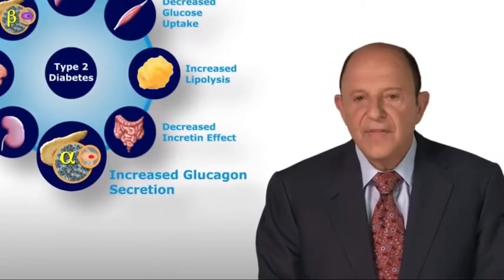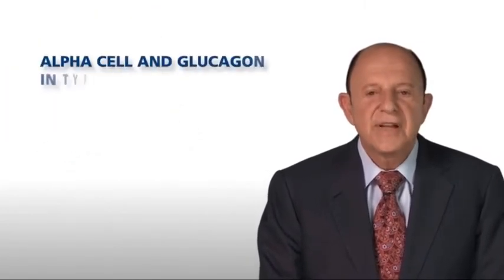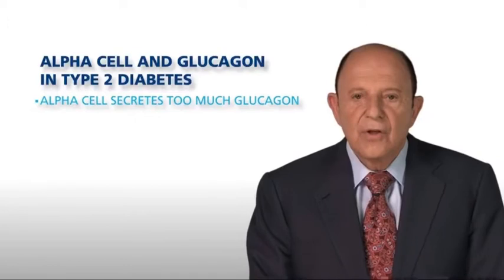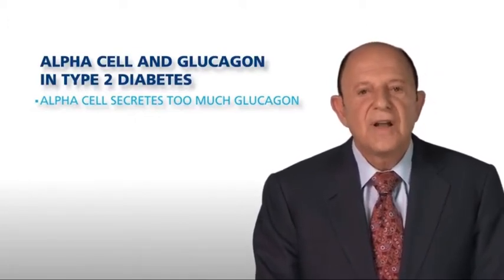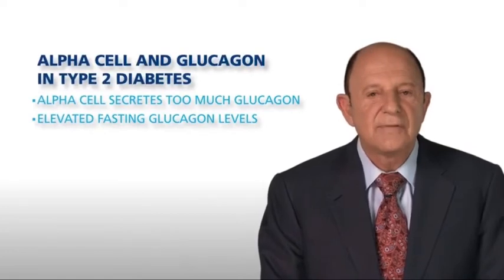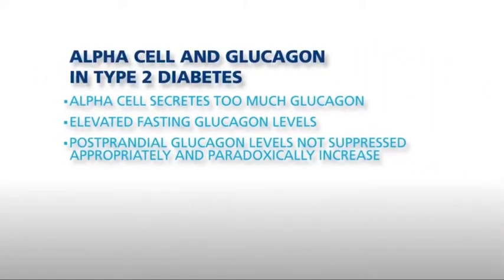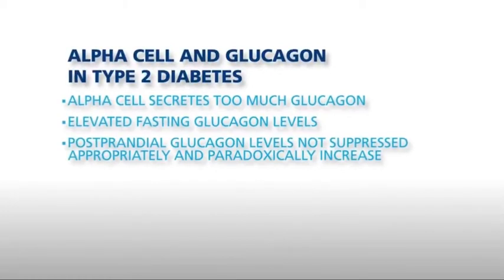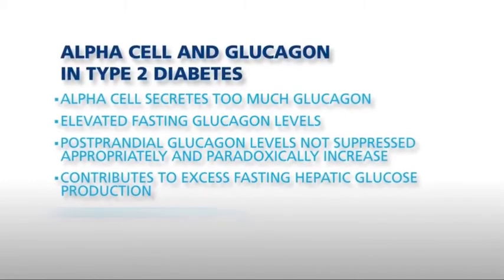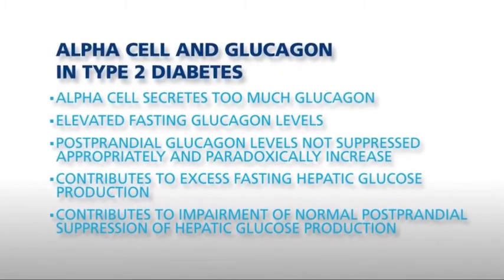At the bottom, we know that the alpha cell also plays a very important role in the pathogenesis of type 2 diabetes. Although we know that the alpha cell hypersecretes glucagon, the role of glucagon in fasting hyperglycemia is often underappreciated. Patients with type 2 diabetes have elevated fasting plasma glucagon levels. In addition, glucagon levels are not appropriately suppressed in response to a meal, and in fact, there may be a paradoxical rise in plasma glucagon levels. We also know that the liver is hypersensitive to the elevated glucagon levels. Therefore, the increase in plasma glucagon, together with the deficiency of insulin, leads to excess hepatic glucose production and impairment of the normal suppression of hepatic glucose production after a meal.